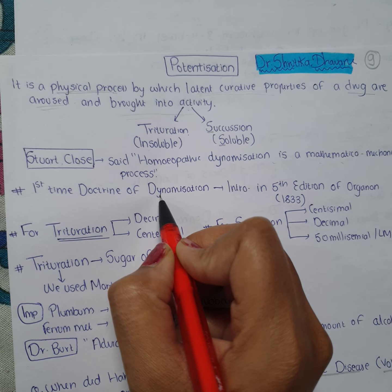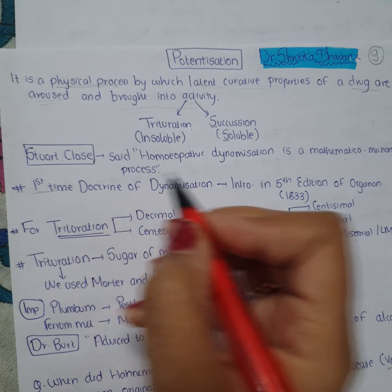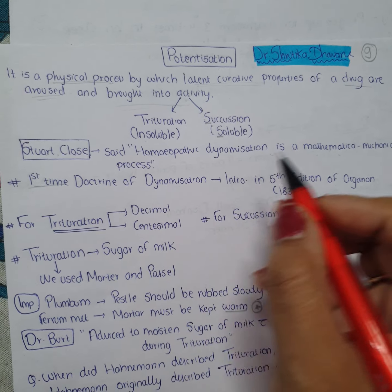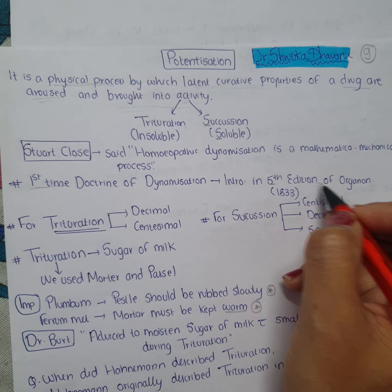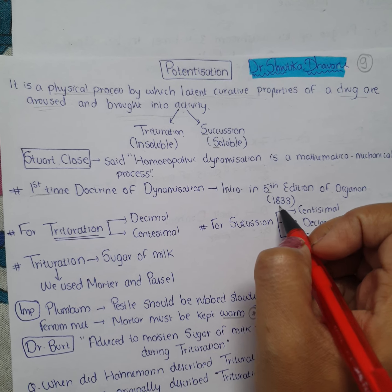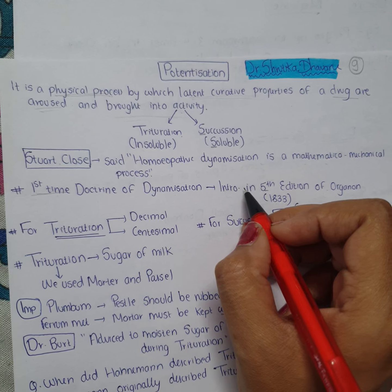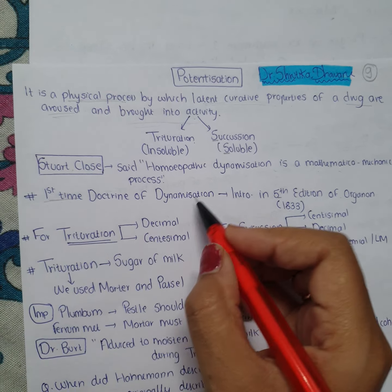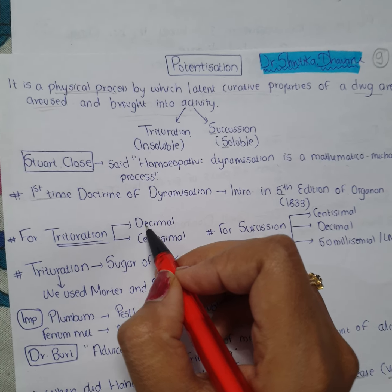Very important: the first time the doctrine of dynamization was introduced was in the fifth edition of Organon, in the year 1833. Fifth edition mein aya hai.